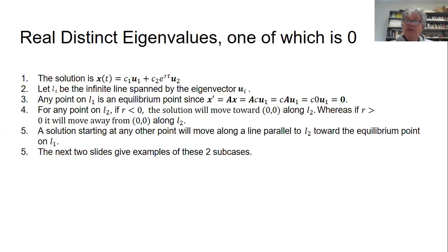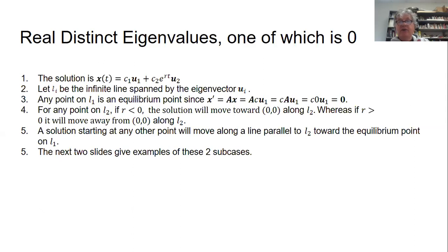For any point on L2, what happens depends on the sign of R. If R is negative, we're multiplying by a negative exponential, so the solution moves towards the origin along line L2. If R is positive, it moves away from the origin along L2. Any other point moves on a line parallel to L2, because any other point is a mixture of the zero eigenvector plus the R eigenvector. Since the zero eigenvector part doesn't change, the motion is in the direction of u2 — moving along a line parallel to L2 towards the equilibrium point at the intersection with L1.